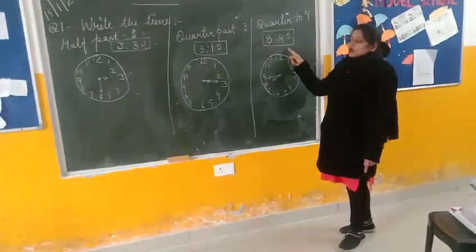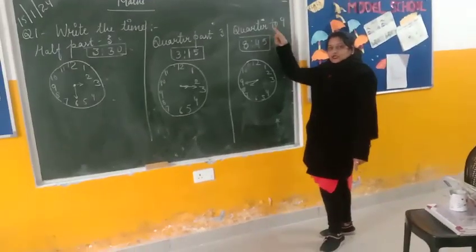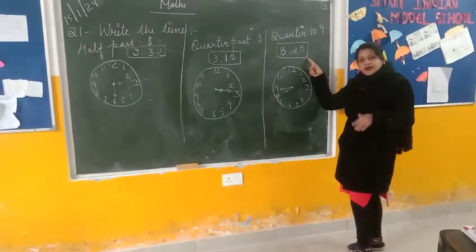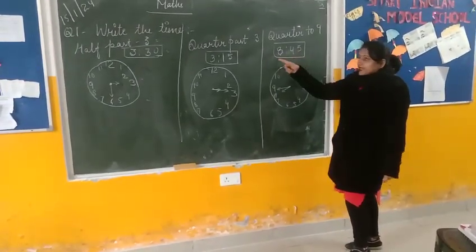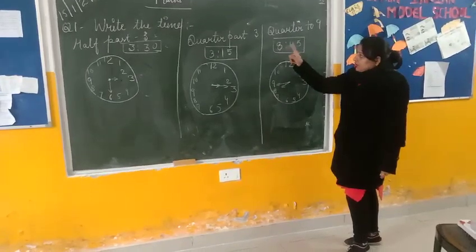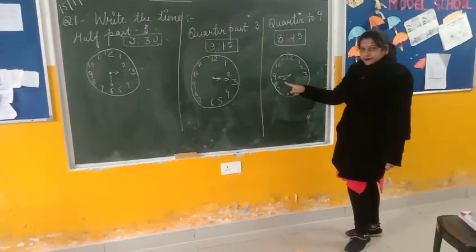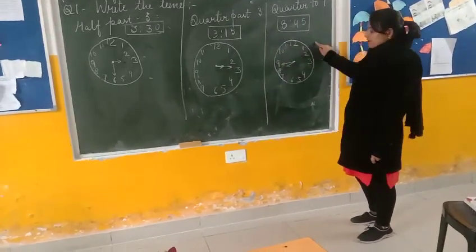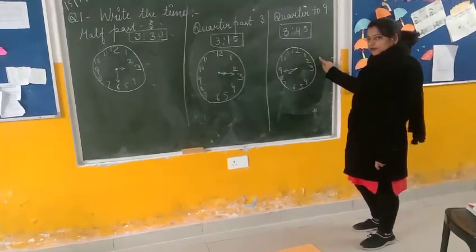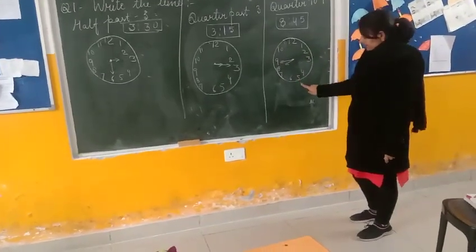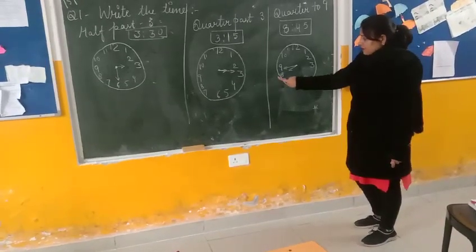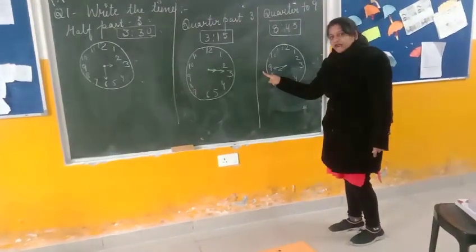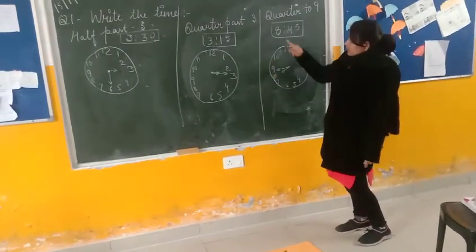The third part is quarter to 9. Quarter to 9 means 8:45. So 15 minutes before. You know: 1 takes 5 minutes, 2 takes 10, 15, 20, 25, 30, 40, and 45. So here the 9 is showing 45 minutes. So you will write 8:45.